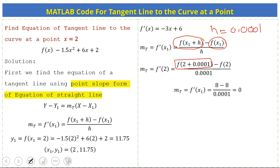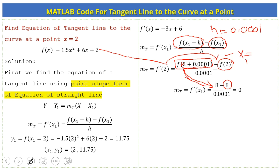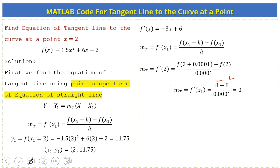When we substitute x = 2 + 0.001 into the function we get f(2.001) ≈ 8. When we put x1 = 2 into the function we also get f(2) = 8. So 8 - 8 = 0, and 0 divided by 0.001 = 0. Therefore the slope of the tangent line at this point is equal to 0.